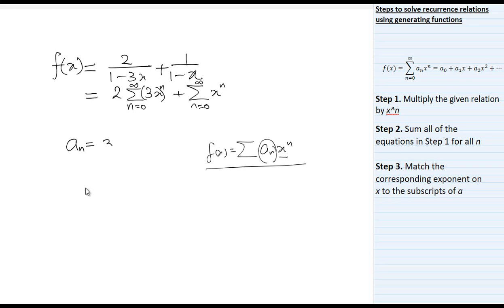The coefficient of x^n is 2 · 3^n + 1, which equals 2 · 3^n + 1, for n ≥ 0. So aₙ = 2 · 3^n + 1. This concludes our result.